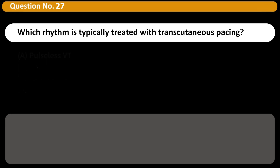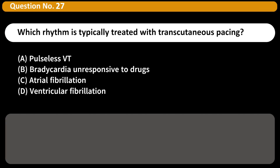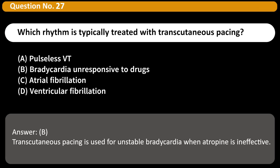Which rhythm is typically treated with transcutaneous pacing? A. Pulseless VT. B. Bradycardia unresponsive to drugs. C. Atrial fibrillation. D. Ventricular fibrillation. Answer: B. Transcutaneous pacing is used for unstable bradycardia when atropine is ineffective.